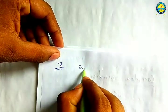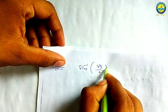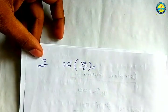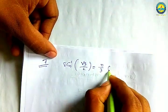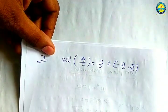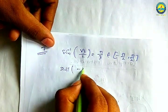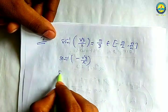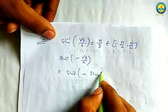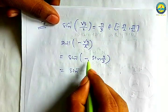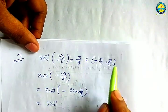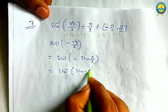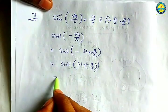Example 6, number 7: sin inverse(root 3 by 2). Root 3 by 2 corresponds to pi by 3. The range is minus pi/2 to plus pi/2. This is minus 90 to plus 90. Then sin inverse sin(minus pi by 3), sin cancels, giving minus pi by 3 as the answer.